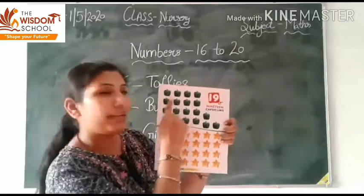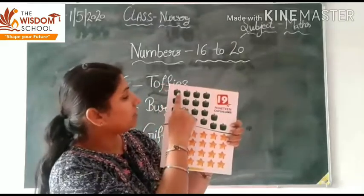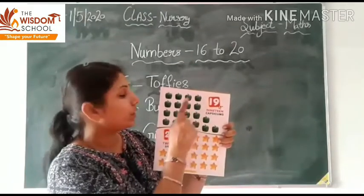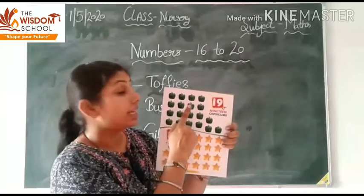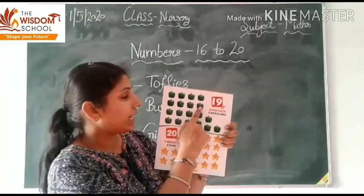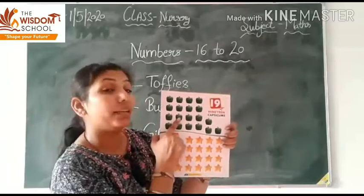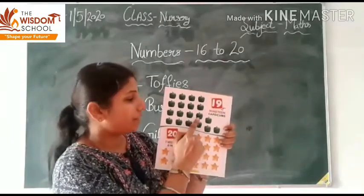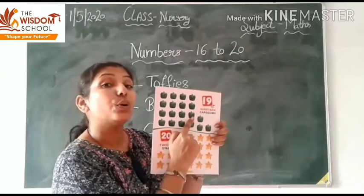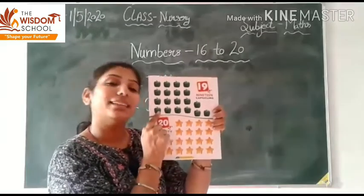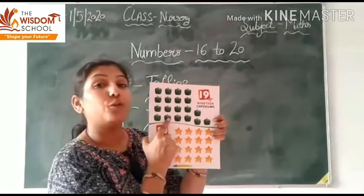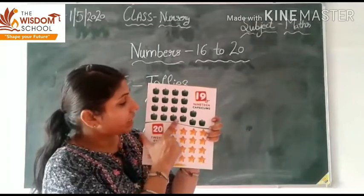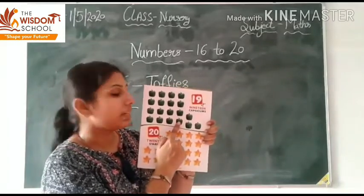Okay, चलिए अभी हम 19 Capsicum count करेंगे. Okay, let us count. 1 2 3 4 5 6 7 8 9 10 11 12 13 14 15 16 17.